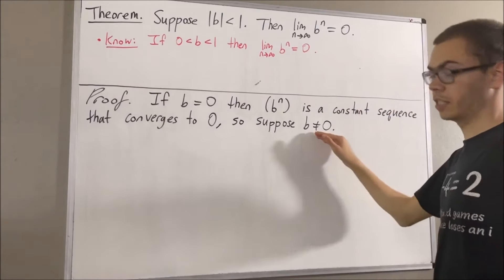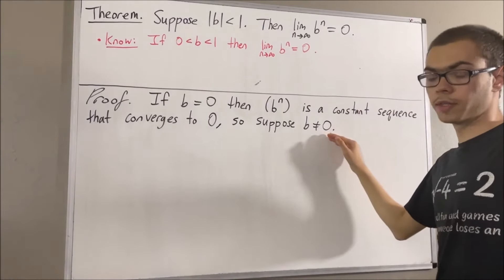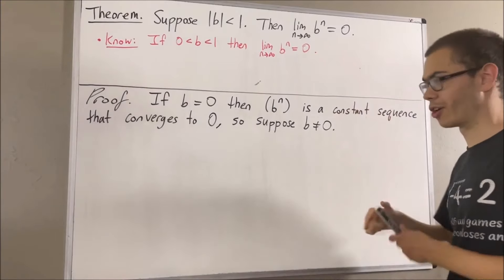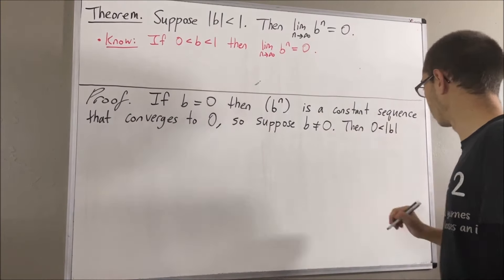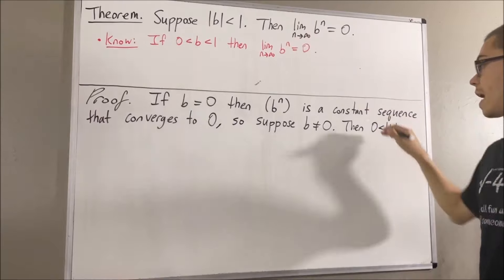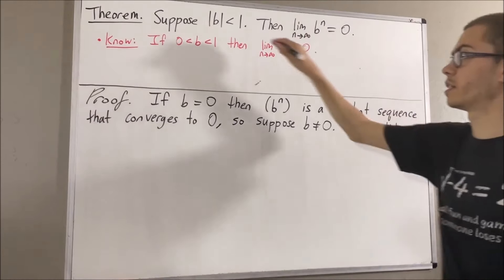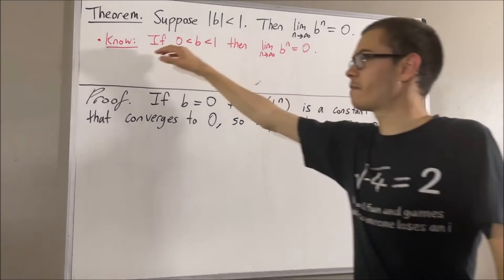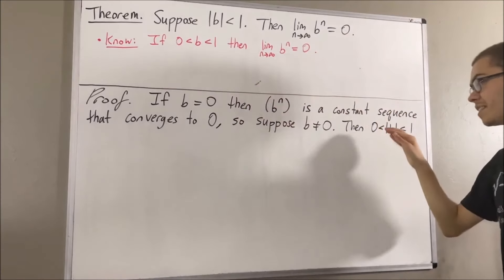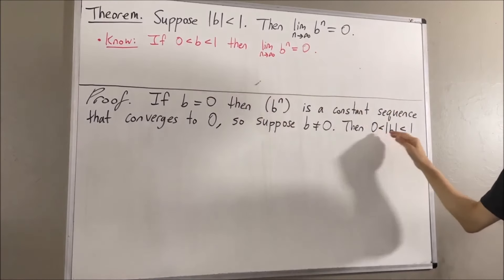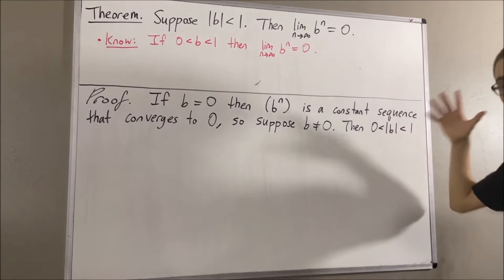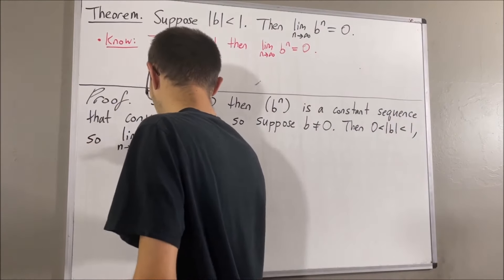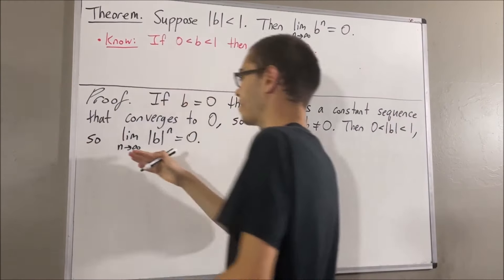If b is not equal to 0, then the absolute value of b must be greater than 0. And by our assumption, the absolute value of b is less than 1. But based on the fact that we already know, since 0 is less than the absolute value of b is less than 1, we must have that this limit result is true.